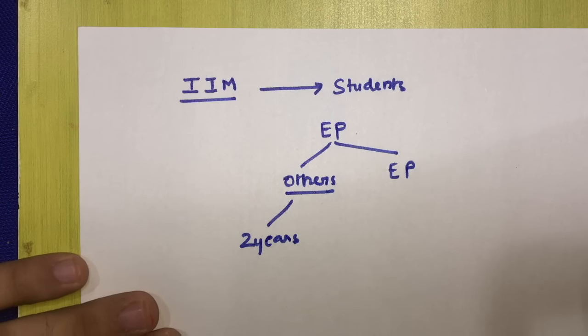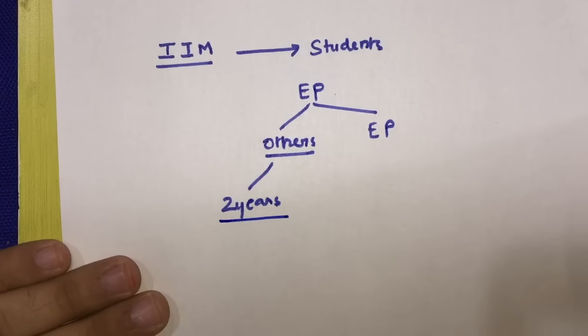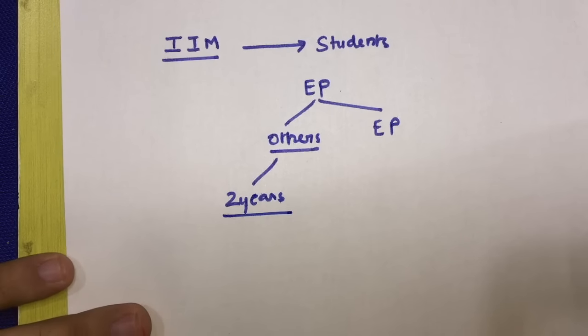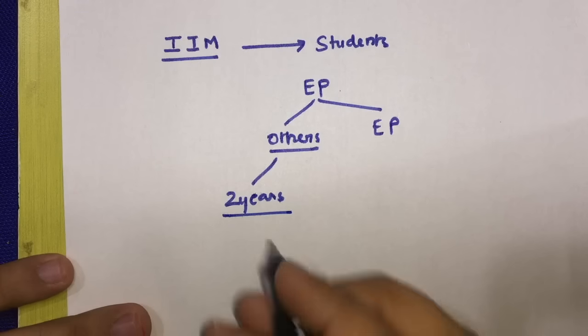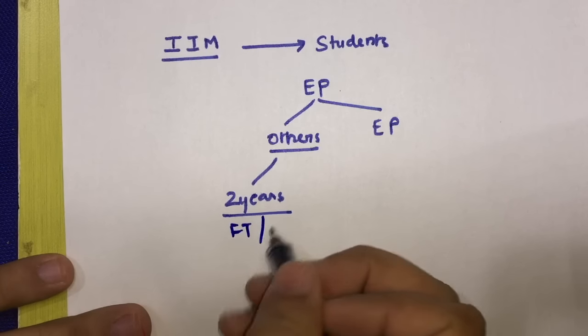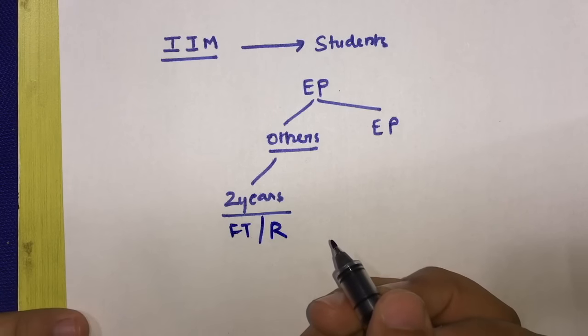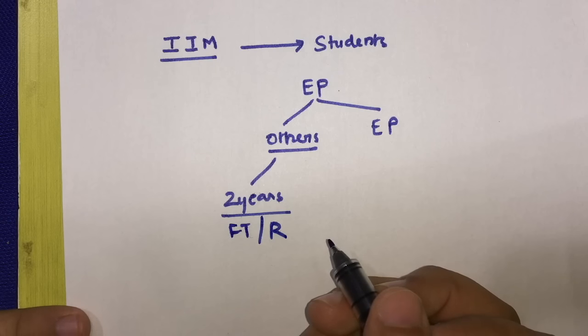First is the two years full-time residential post-graduate program in management, which is most famous. Students give CAT exam and try hard to get admission under this. This is for the post-graduate diploma in management to which admissions are made on the basis of common admission test conducted by IIM.